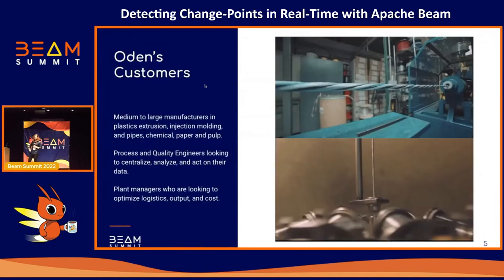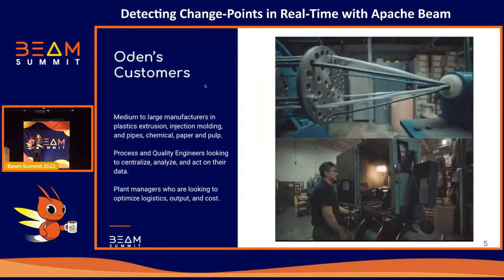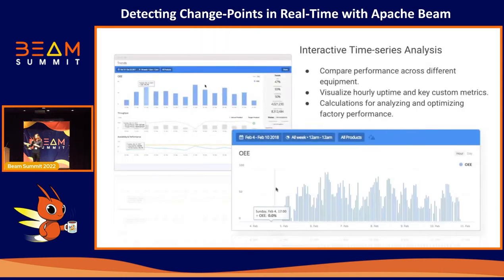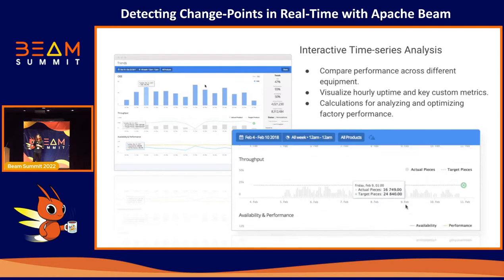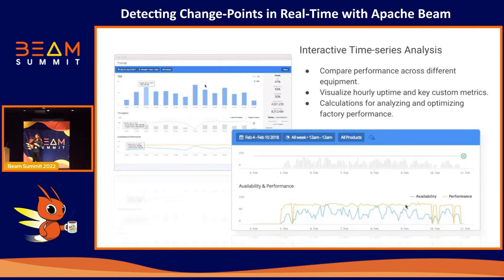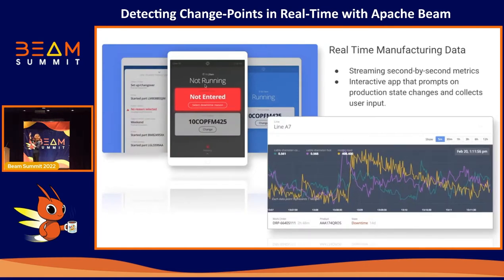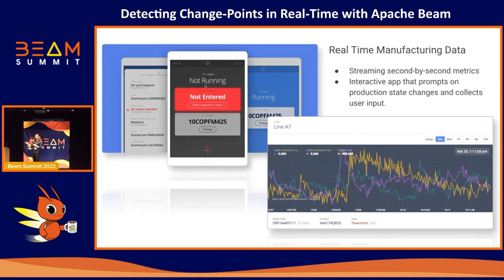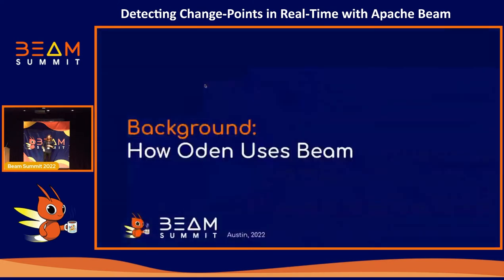To give a little background on Odin: our customers are manufacturers — factories in plastic extrusion, injection molding, pipes, chemical, paper and pulp. They have processing quality engineers; it's just that instead of computers, they're working with very physical, real things. We do something that looks a lot like New Relic or Datadog — it's an analytics product. The metrics we provide go directly to them. The only difference from what you're used to is that it's real sensors, and we do a lot of real-time stuff: alerting, real-time streaming of metrics. We care a lot about things happening in real time.